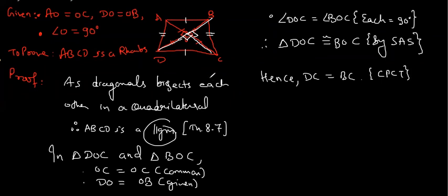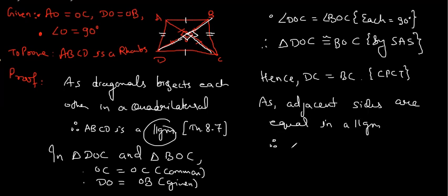Similarly, others are also equal. So can we say as adjacent sides are equal? Adjacent means these two. In a parallelogram, therefore A, B, C, D is a rhombus. Any doubt?